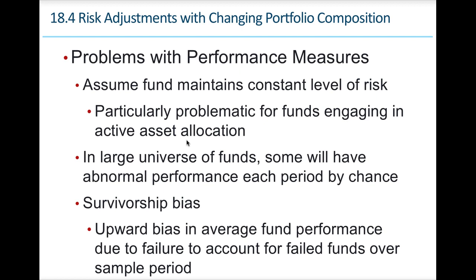Some problems with performance measures: first, these measures assume funds maintain a constant level of risk, but risk changes every day. Measuring alpha and beta is a snapshot of that moment in time, which is especially problematic for funds with large, dynamic asset allocations. Also, in a large universe of funds, you might see abnormal performance in any given period simply by chance. There's also survivorship bias — an upward bias in average fund performance due to failure to account for failed funds over a similar period.